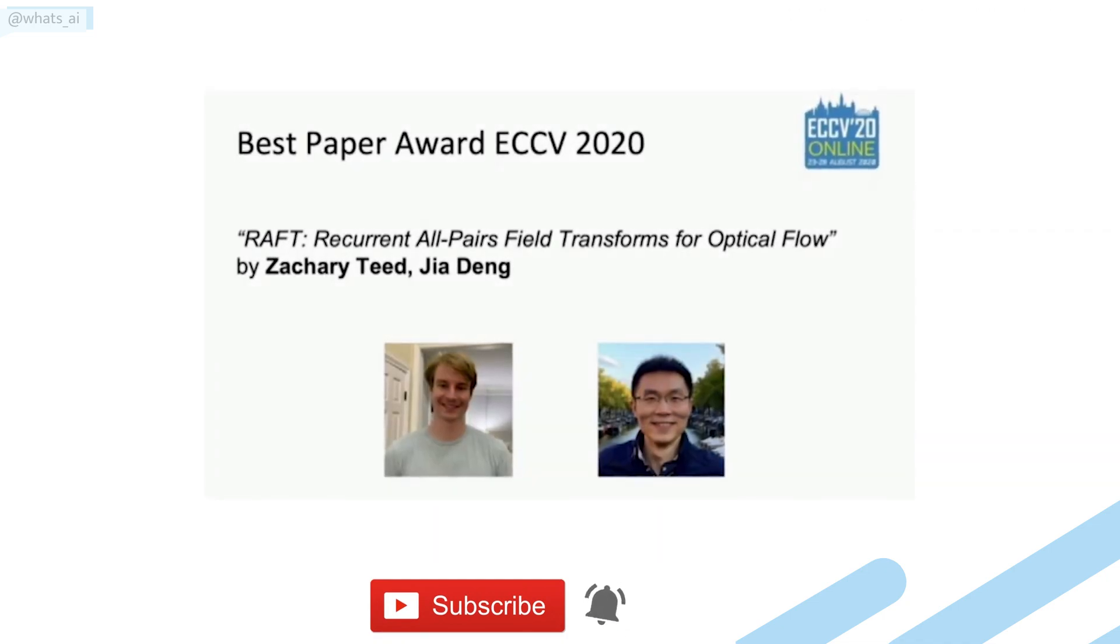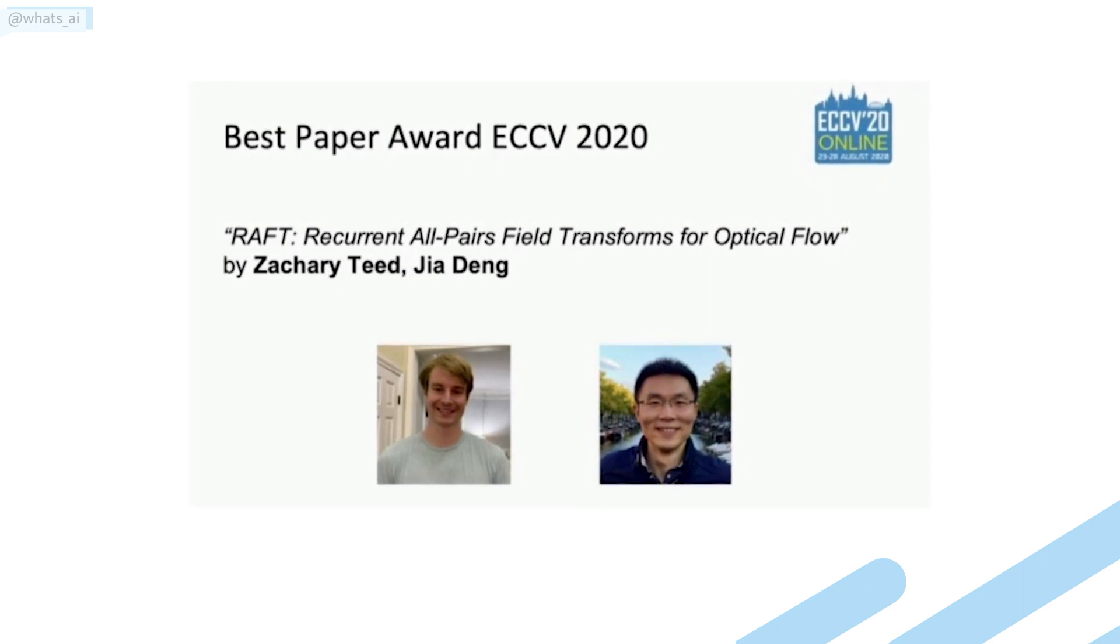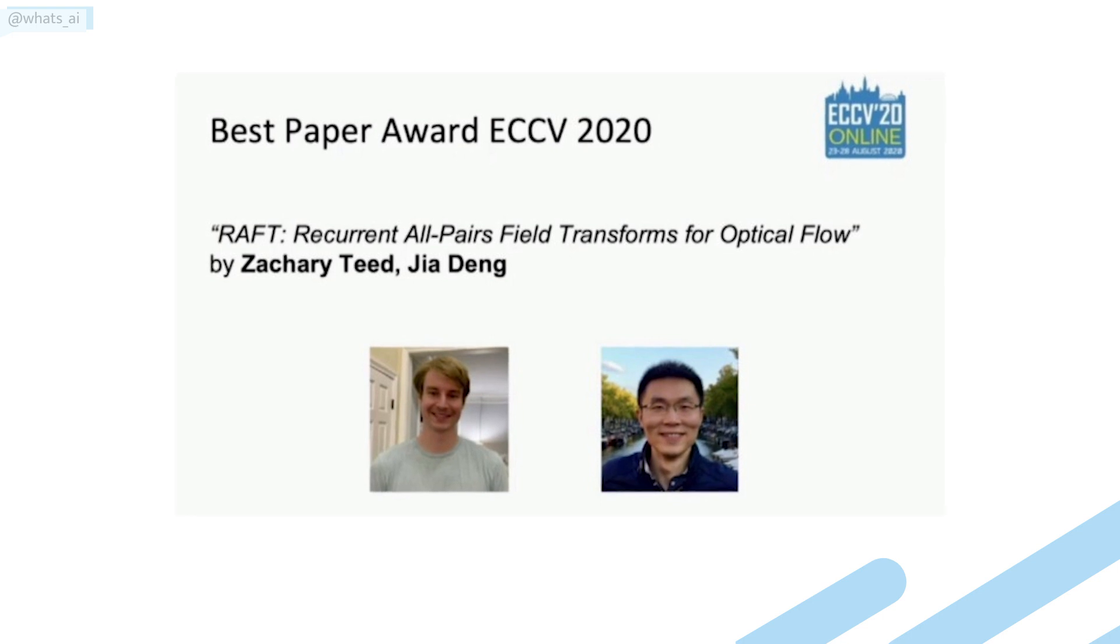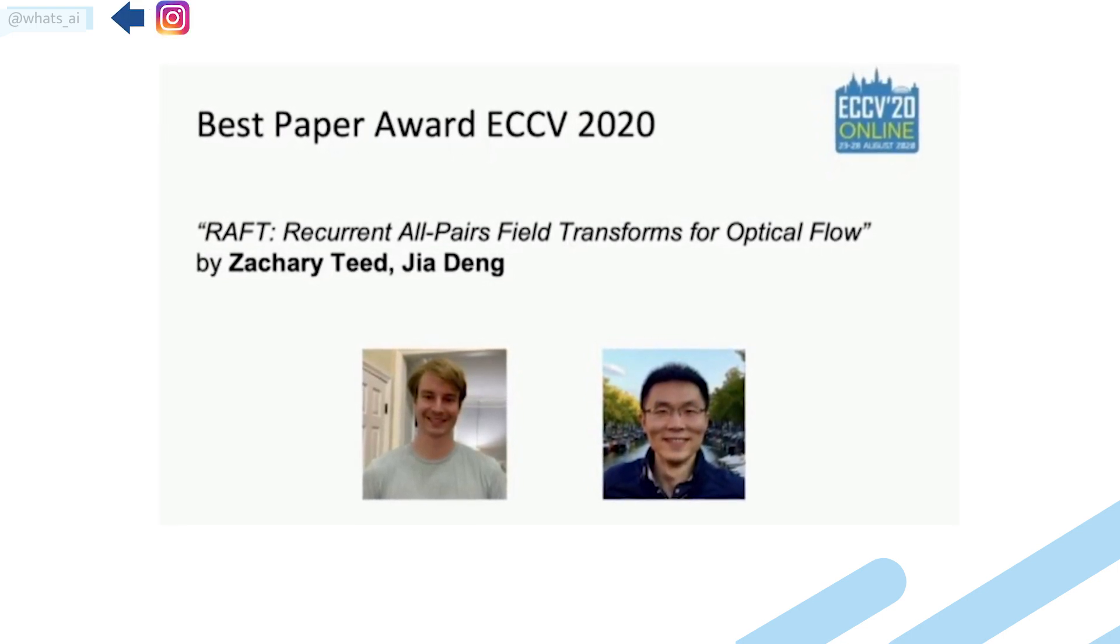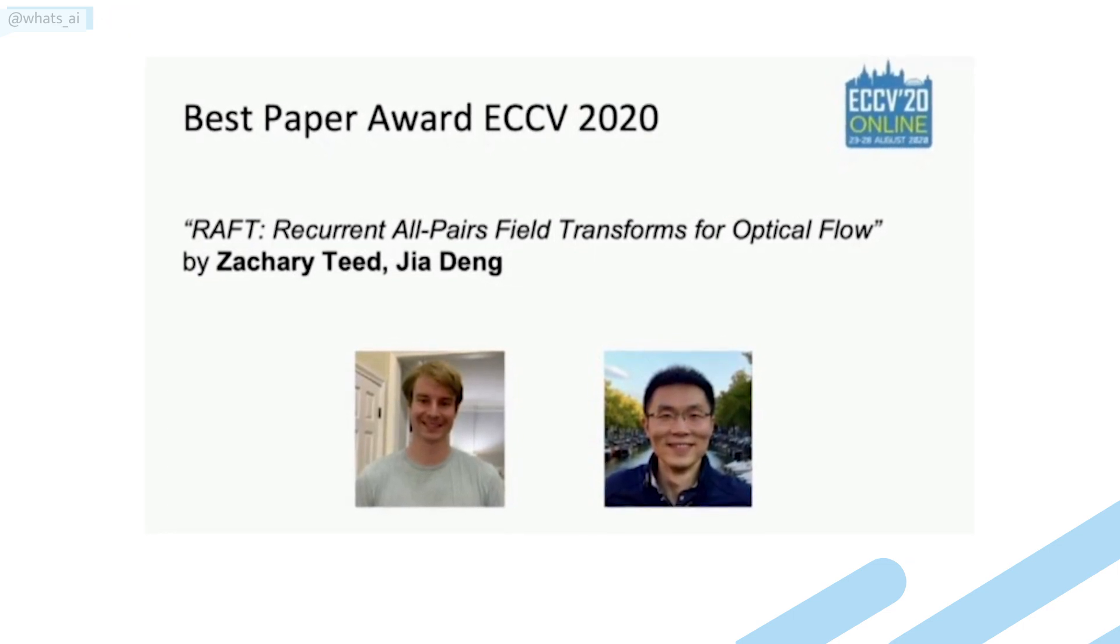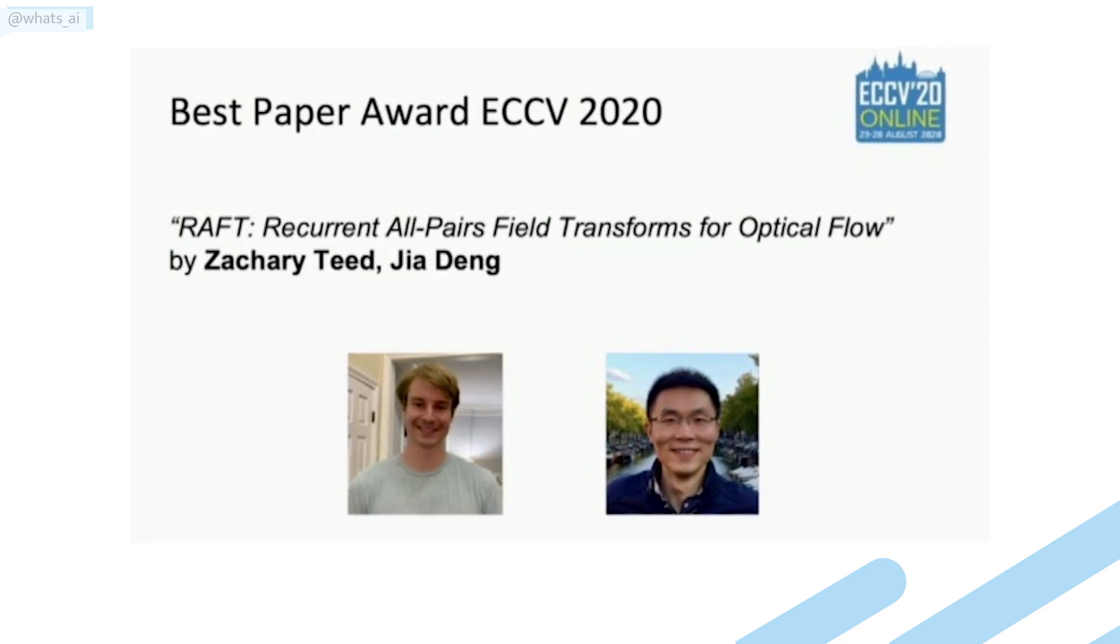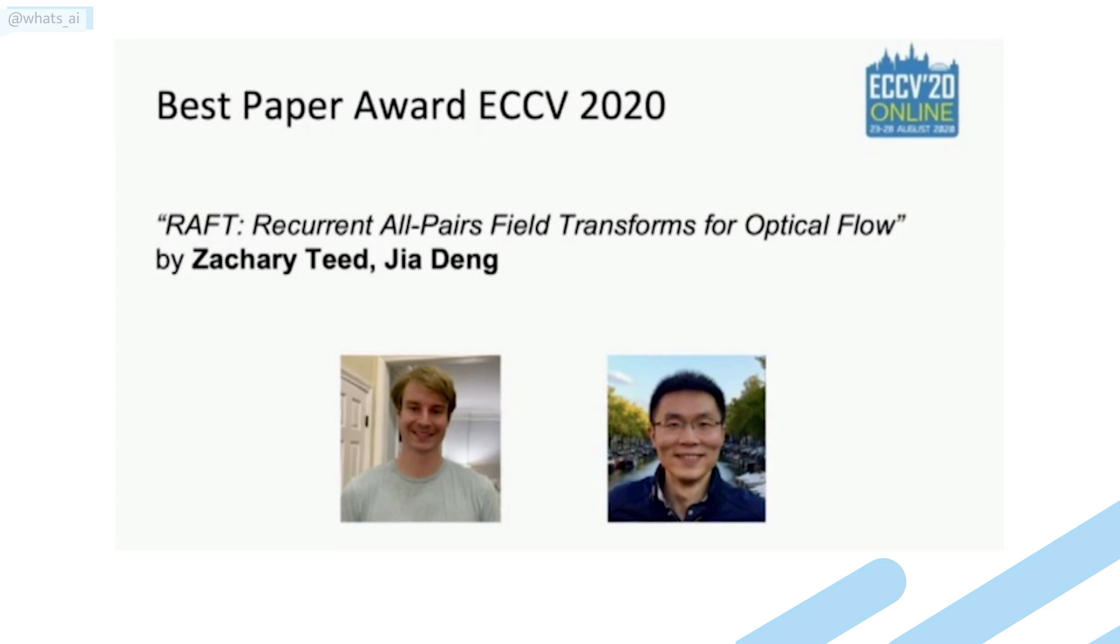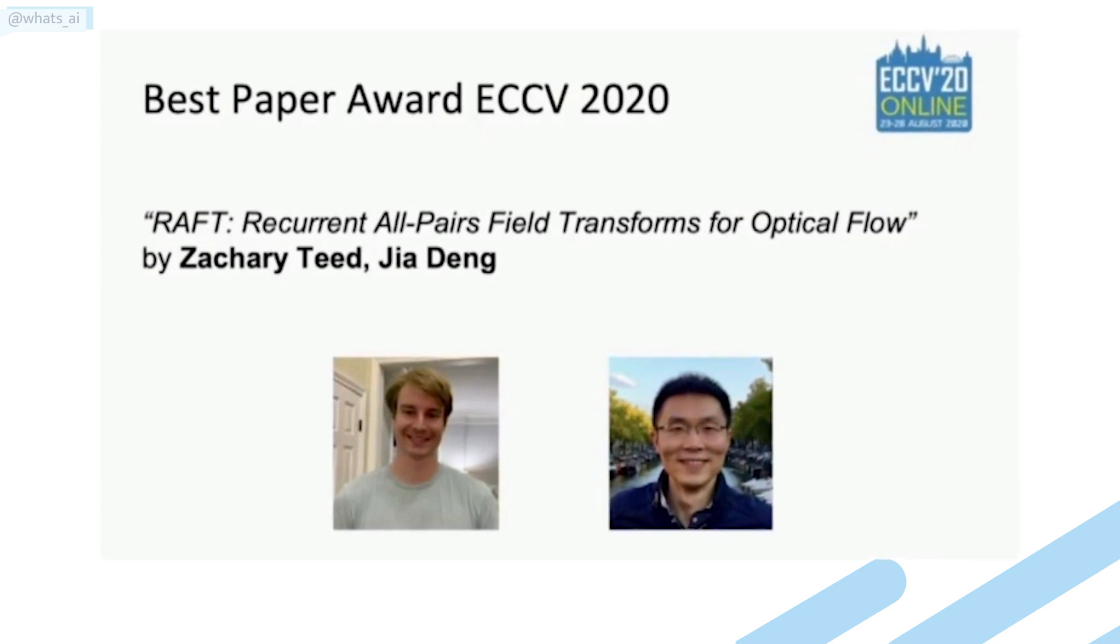The ECCV conference happened last week. A ton of new research papers in the field of computer vision were out just for this conference. Here, I will be covering the best paper award that they gave to the Princeton team. In short, they developed a new end-to-end trainable model for optical flow called RAFT, Recurrent All Pairs Field Transforms for Optical Flow. Their method achieves state-of-the-art accuracy across multiple datasets and is way more efficient.